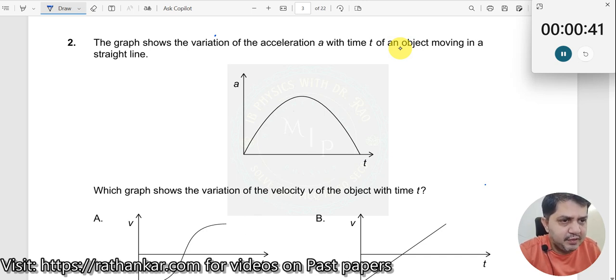So how do we do this? See here, the acceleration is continuously varying. When it is varying, velocity will also vary, but we do not know how it varies. So what we will do is, let us look at some aspect, some important parameter here.